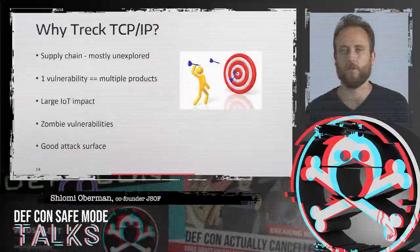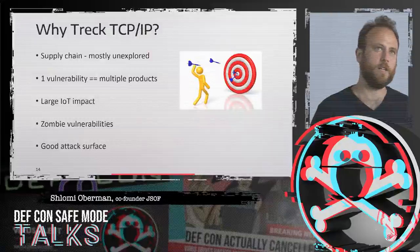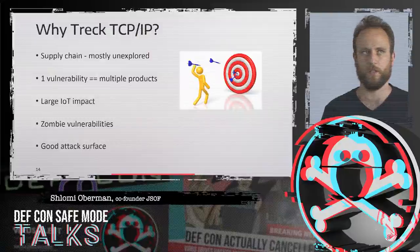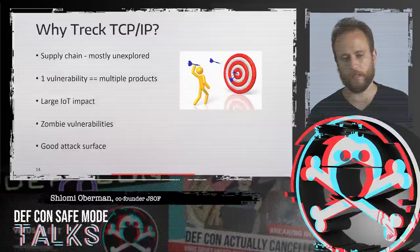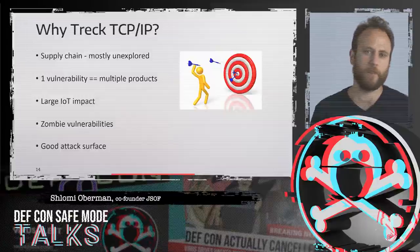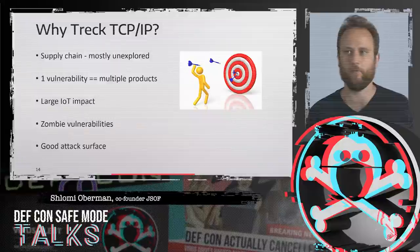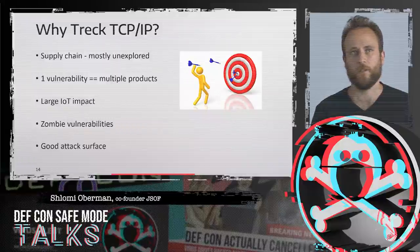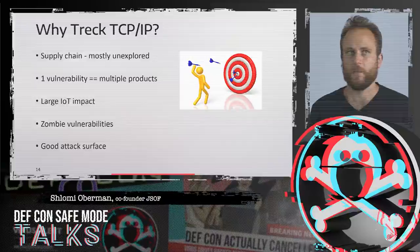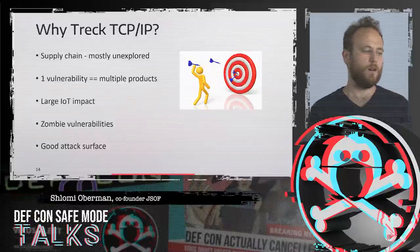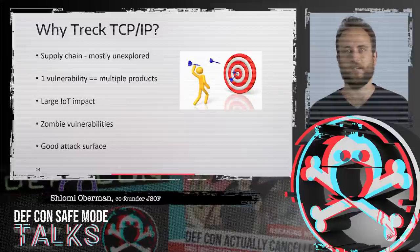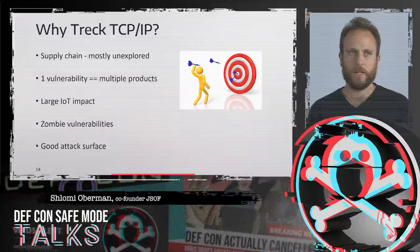So why did we choose to do this research on Trek TCP/IP, and why do we think it's important for the security industry as a whole? This aspect of vulnerabilities existing in the supply chain — not as backdoors, but as regular vulnerabilities — rippling from device to device in this ripple effect, is something that is mostly unexplored. Ripple20 is really a prime example of what happens when a vulnerability is located this deep in the supply chain and exists for so many years. One vulnerability, multiple products, huge impact.